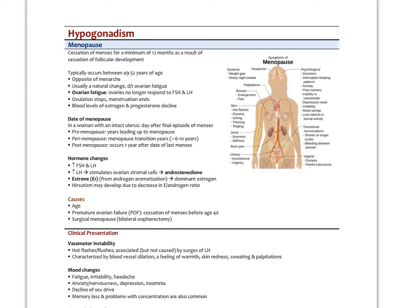The date of menopause in a woman with an intact uterus is the day after her final episode of menses, though we must wait one year of missed periods to confirm it. Premenopause refers to the years leading up to menopause; perimenopause is the menopause transition, usually about 6 to 10 years; and postmenopause begins one year after the date of the last menses.